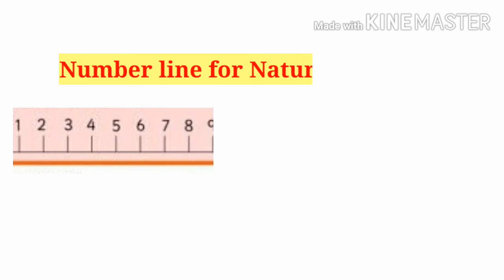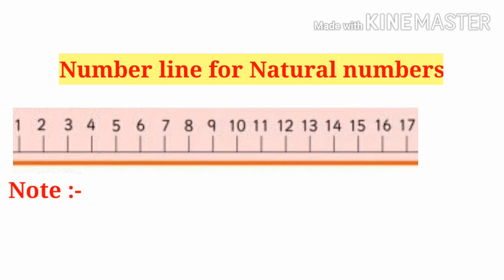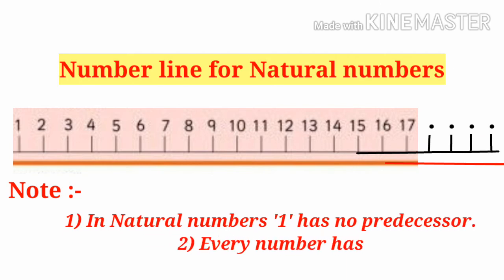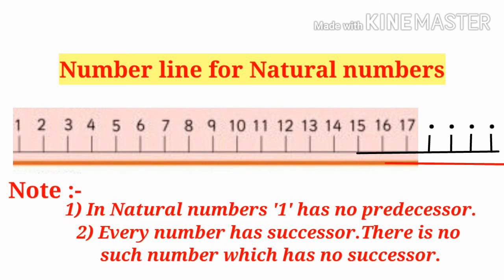Let us draw a number line for natural numbers. If a line is drawn and numbers are written at an equal distance, it is called number line. Observe that in natural number, one has no predecessor. Every number has a successor.